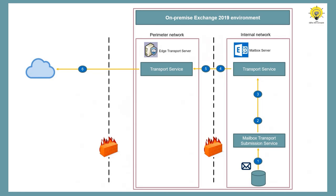In these two examples, we can see that only the Edge Transport Server is communicating with external email servers, and the mailbox server is sitting behind the firewall.